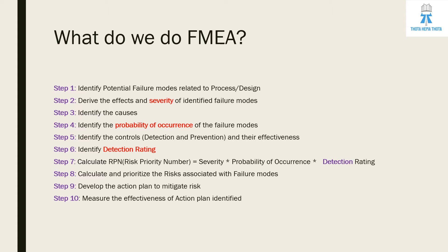Step six is to identify the detection rating. Step seven is to calculate the RPN — risk priority number — which is a multiplication of severity, probability of occurrence, and detection rating. Step eight is to calculate and prioritize the risks associated with failure modes. Step nine is to develop an action plan to mitigate risk. Step ten is to measure the effectiveness of the action plan identified.